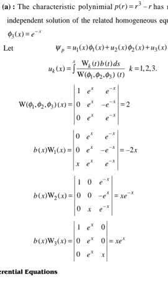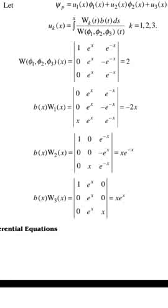Substituting the solutions, the Wronskian matrix entries give: row 1: [1, e^x, e^(-x)], row 2: [0, e^x, -e^(-x)], row 3: [0, e^x, e^(-x)]. Then b(x)·W(x) = determinant with first column replaced by [0, 0, x], giving the value -x. So W₁(x) = -x.